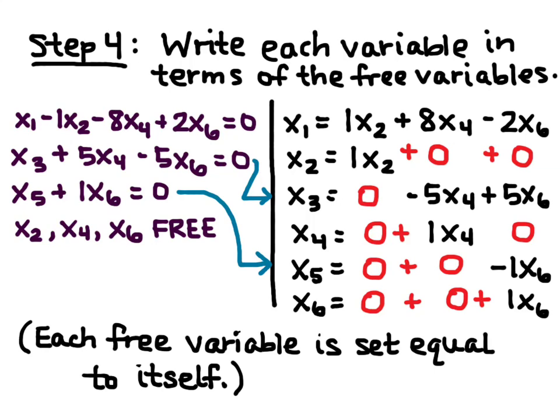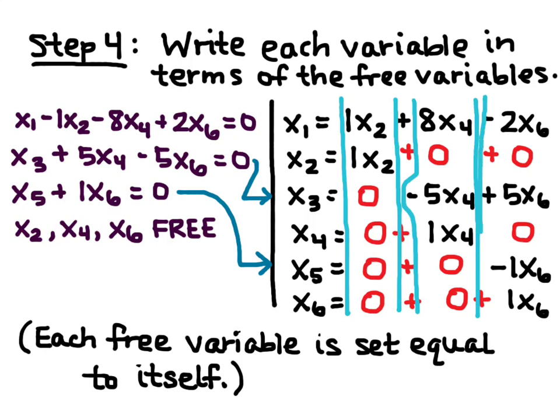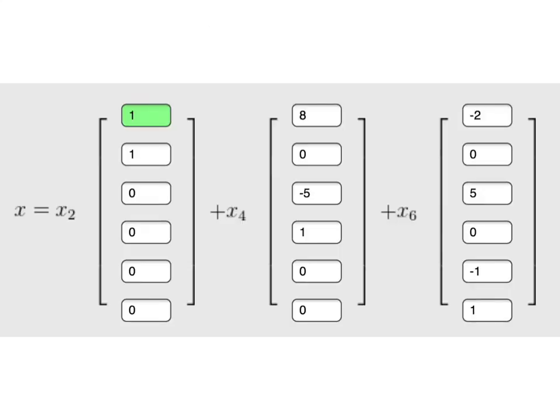I'm asked to give my solution in parametric vector form. So, I'll have three vectors because I have three free variables. What I do is I look at my X2 column, my X4 column, including the negatives, and my X6 column. These are my solutions, and I just put them into the solution box, and it's solved.